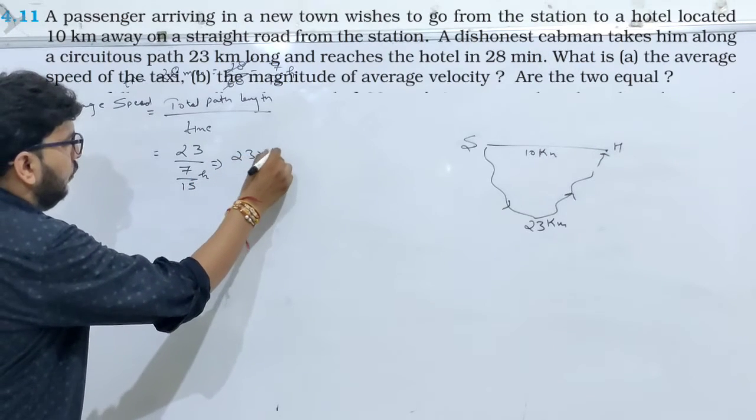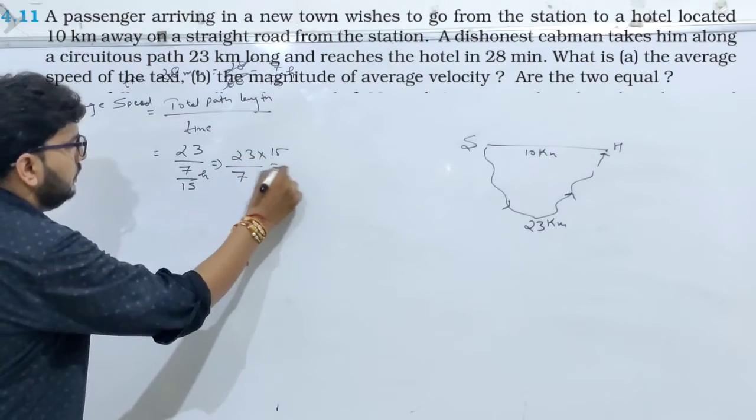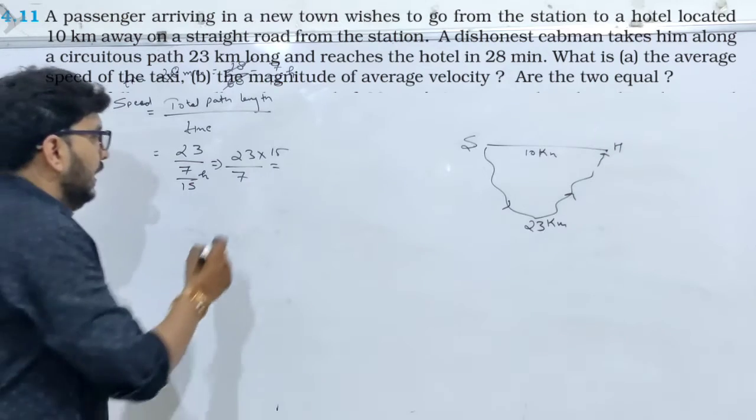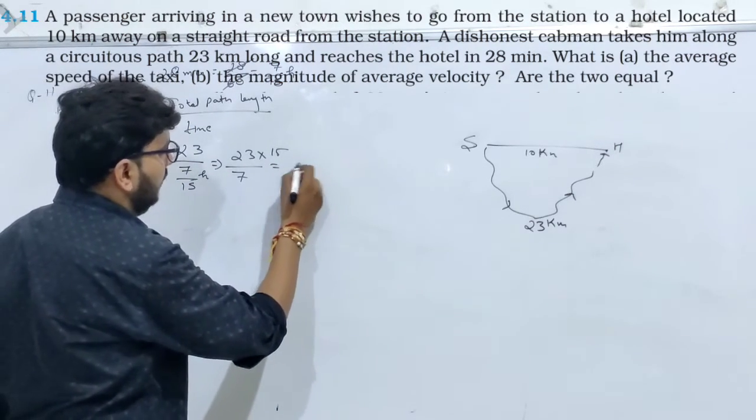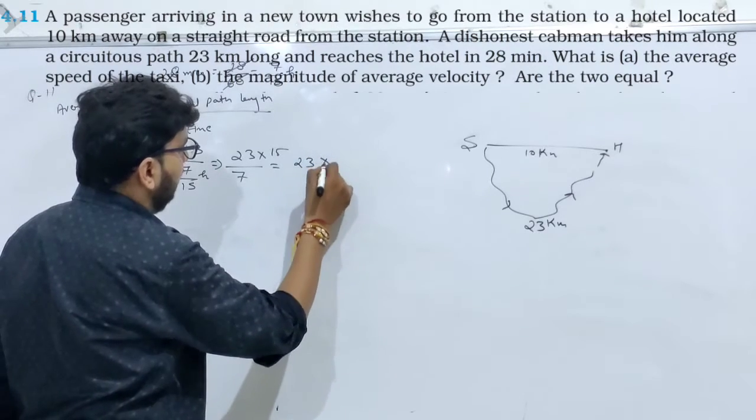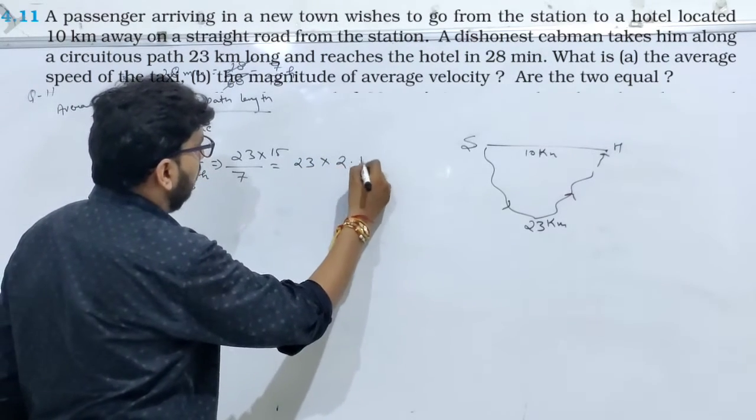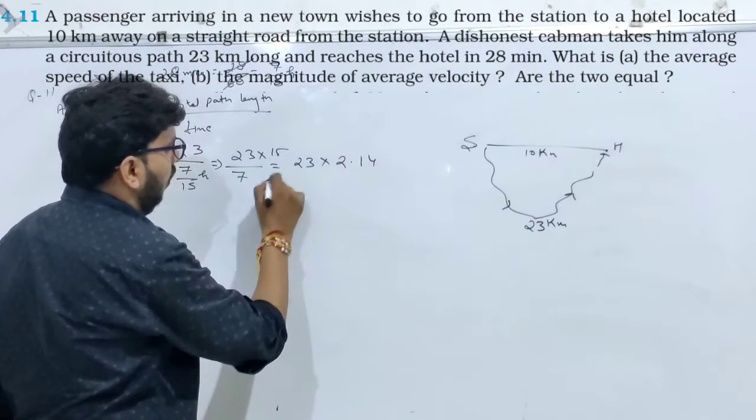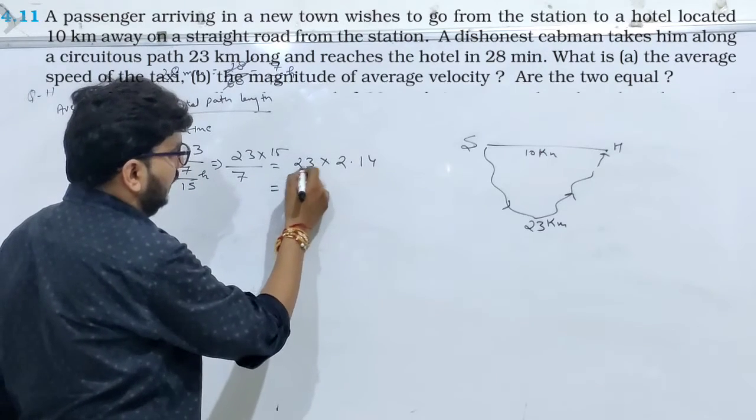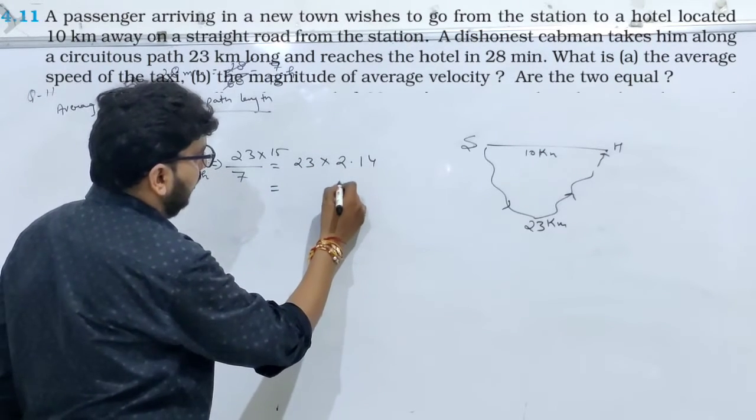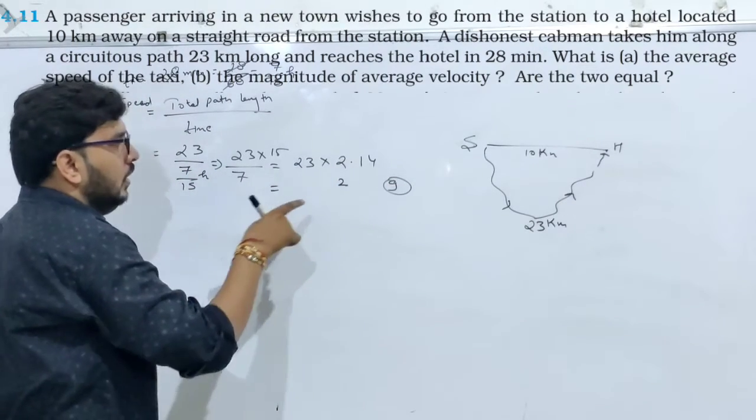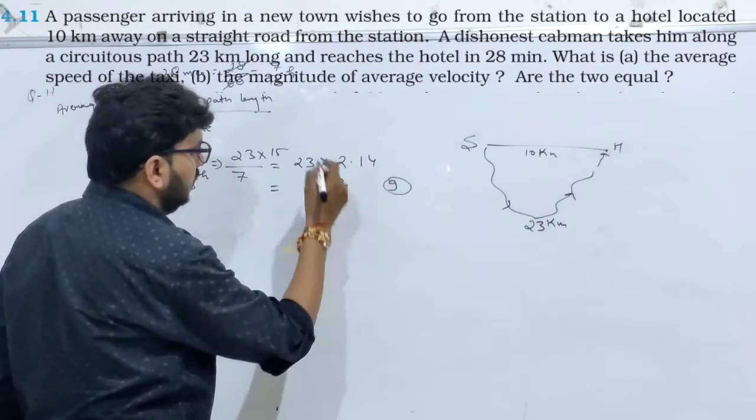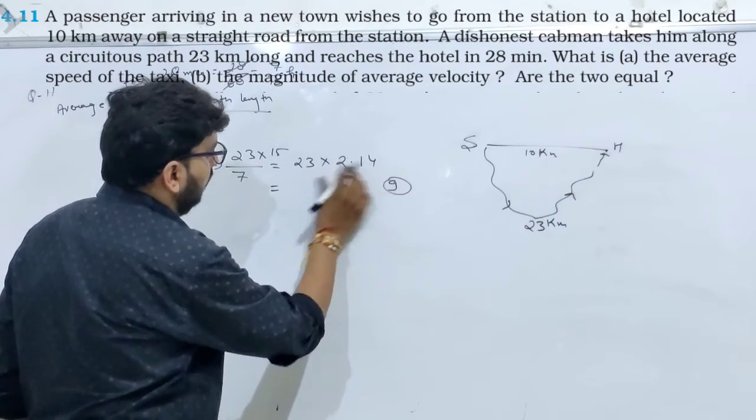So 23 into 15 divided by 7. इसको अगर हम divide करेंगे, 15 को 7 से, so it will be 23 into 2.14. और इसको multiply किया, 23 fours, it will be 92, 9 carry, 23 × 2.